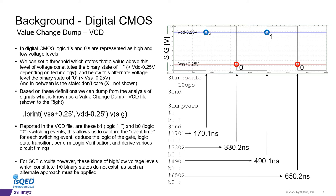Based upon these definitions, using HSPICE's .lprint method, HSPICE will report what is known as a value change dump file. Reported in the VCD are these B1 logic state 1 and B0 logic state 0 switching events. This allows us to capture the event time for each switching event, deduce the logic of the gate, logic state transition, perform logic verification, and derive various circuit timings. For superconducting electronic circuits, however, these kinds of high-low voltage levels, which constitute 1-0 binary states, do not exist. As such, an alternate approach must be applied.